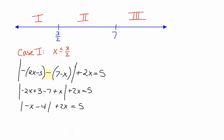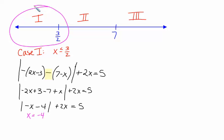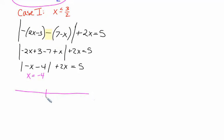Now we have to look for a potential additional key number. In this situation, x equals negative 4 is going to be another key number. We're in the case where x is less than or equal to 3/2, and negative 4 falls in that case. So we split this into two subcases — subcase a and subcase b — with negative 4 here and 3/2 over here.